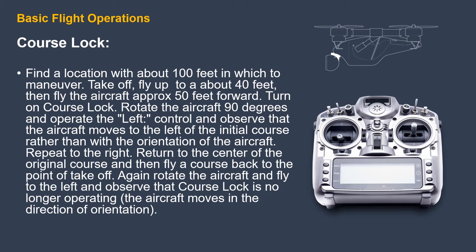Orientation course lock practice: find a location with about 50 feet in which to maneuver. Lift off to about 40 feet, then fly the aircraft over 50 feet forward. Turn on course lock and turn the aircraft 90 degrees. Operate the left control on the right control stick and you'll see the drone moves to the left of the initial course rather than the way the drone is facing. Return to the center of the original course and fly back to the point of takeoff. Now that the drone is within 50 feet of the control point, it moves in the direction it's facing.